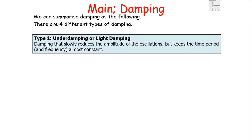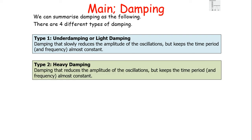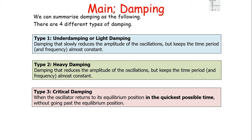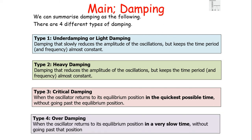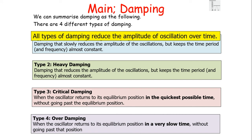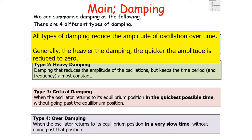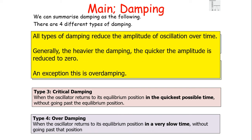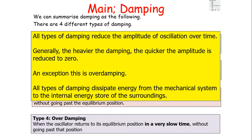To summarise the four types of dampening: (1) Under-dampening or light dampening — slowly reduces amplitude but keeps time period and frequency constant. (2) Heavy dampening — reduces amplitude but keeps time period and frequency almost constant, but faster. (3) Critical dampening — the oscillator returns to equilibrium in the quickest possible time without going past it. (4) Over-dampening — the oscillator returns to equilibrium very slowly without going past it. All types of dampening reduce the amplitude over time and dissipate energy from the mechanical system to the internal energy of the surroundings. Generally, heavier dampening reduces amplitude to zero more quickly, with the exception of over-dampening.